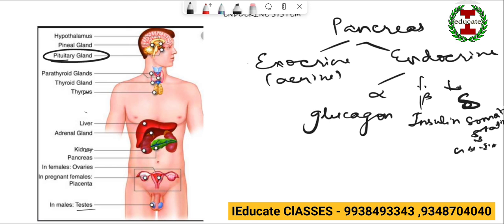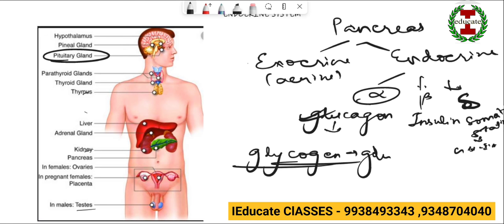Now moving on to the alpha cell which produces a hormone glucagon. The function of hormone glucagon is to convert glycogen into glucose. Now whenever there is an energy requirement in our body, glucagon converts the stored glycogen in our body into glucose. And the function of insulin is antagonistic to that of the glucagon, or we can say its opposite. It converts glucose into glycogen and stores it inside our body.